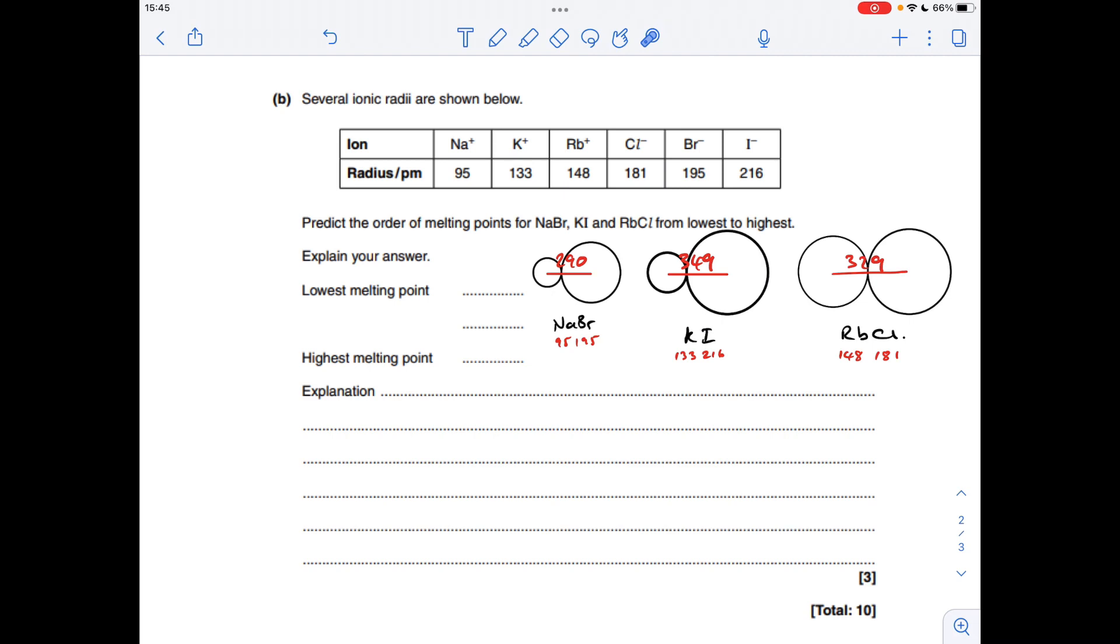And then if we think about the relative attractions between the oppositely charged ions in these three, then hopefully you can appreciate that the furthest apart ions are going to have the weakest attraction and therefore the lowest melting point. So the lowest melting point is going to be this one here, potassium iodide, then rubidium chloride, and then finally sodium bromide.